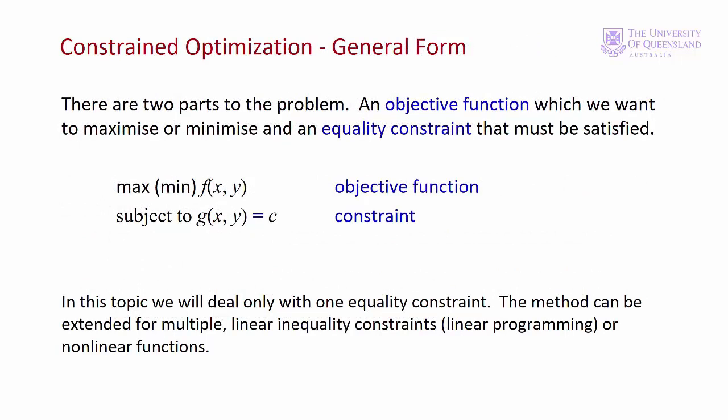There are two parts to a constrained optimisation problem. First there's the function we want to find the optimal value for — this is called the objective function. Since we're optimising the function we're finding either the maximum or minimum value. The second part is that there is at least one constraint, so we maximise or minimise the objective function subject to the constraint. In this course we'll restrict ourselves to problems with only one constraint, which is sufficient to understand the principles and is easily extended.